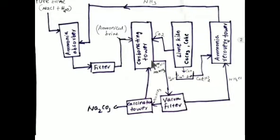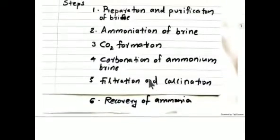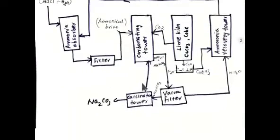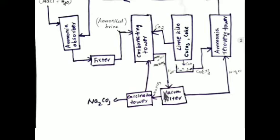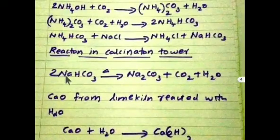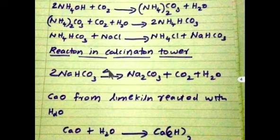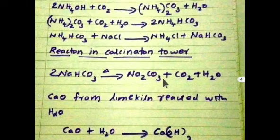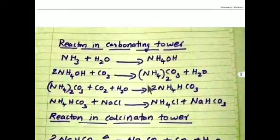The fifth step is filtration and calcination. The mixture from the carbonating tower — ammonium chloride and sodium bicarbonate — is sent to a vacuum filter to separate them. The sodium bicarbonate is sent to a calcination tower where it is heated: 2 NaHCO₃ → Na₂CO₃ + CO₂ + H₂O. The carbon dioxide byproduct is sent back to the carbonating tower.